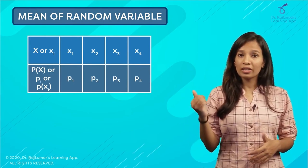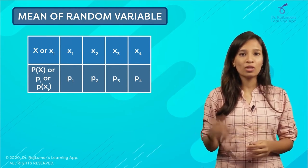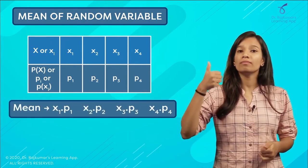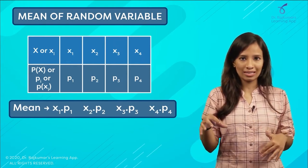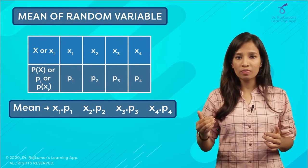To find the mean of this probability distribution, you multiply your x values with your P(x), the probability of this x. When you do this for all the outcomes and add them, you get the mean of your probability distribution.